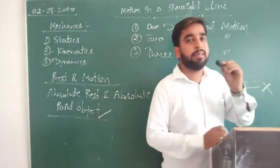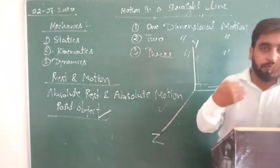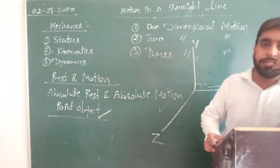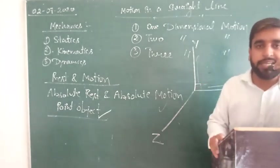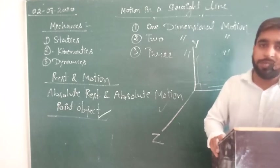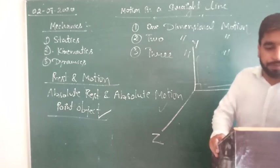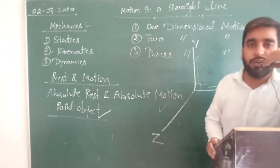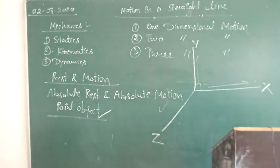We will also discuss uniform motion and non-uniform motion. If an object is covering equal distance in equal intervals of time, that is uniform motion. If an object is covering unequal distance in equal intervals of time, it is non-uniform motion. That will be enough for today. We will make more lectures. Thank you, God bless you.